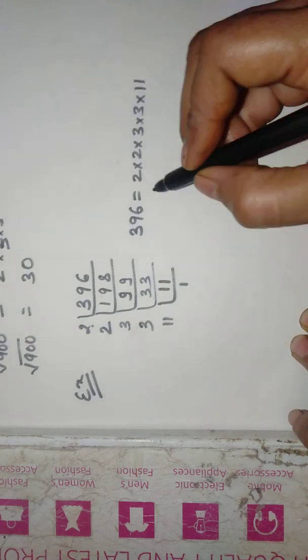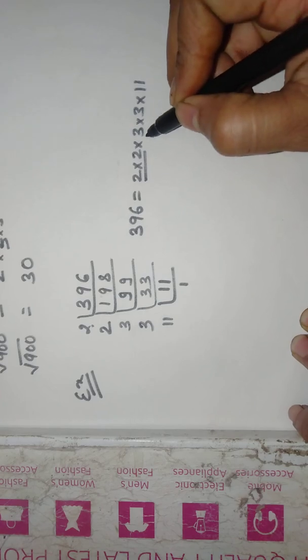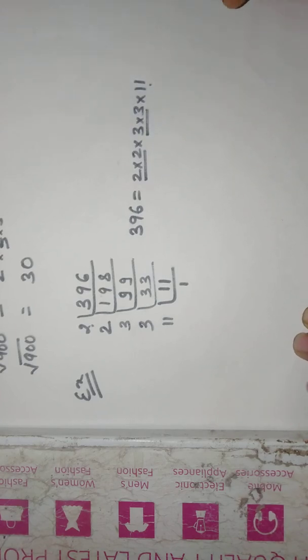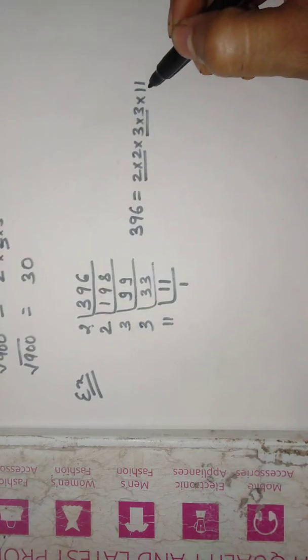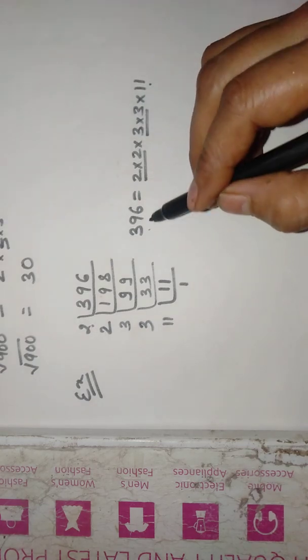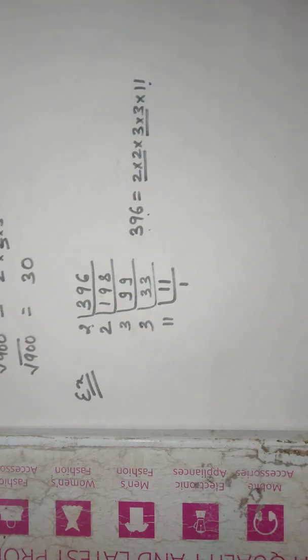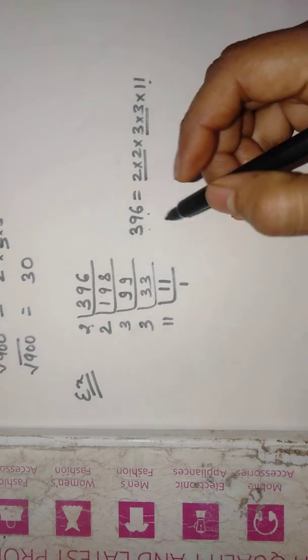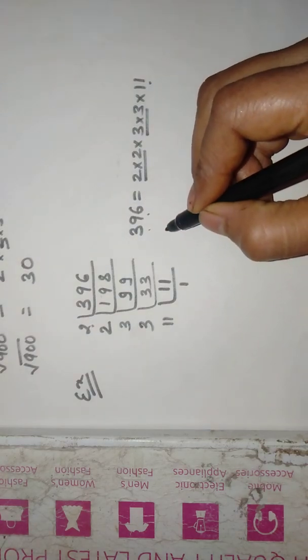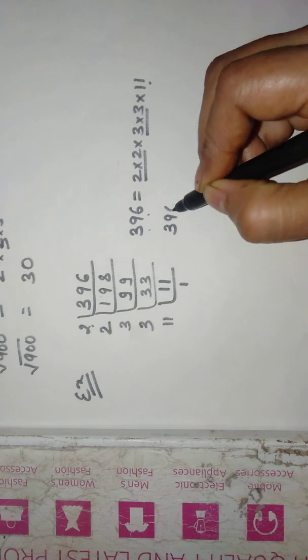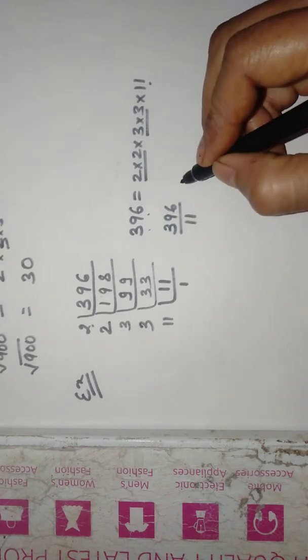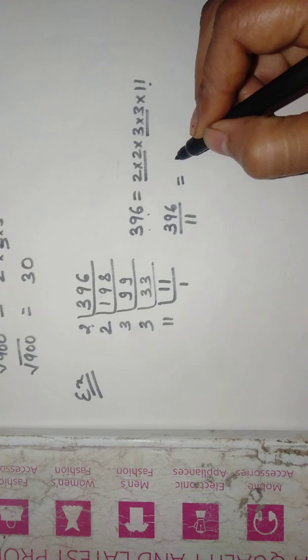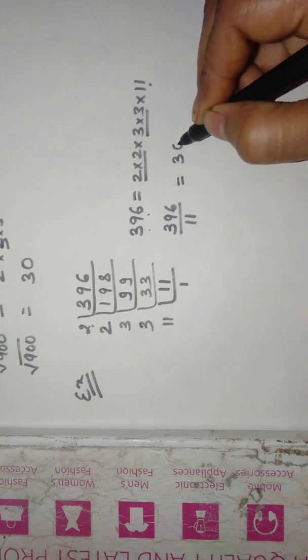Now pairing up the common factors, 2 is there, 3 is there and 11 is left over. So if we divide this number 396 by 11, then it must be a perfect square. So we just divide 396 by 11 and on division we will be getting 36.